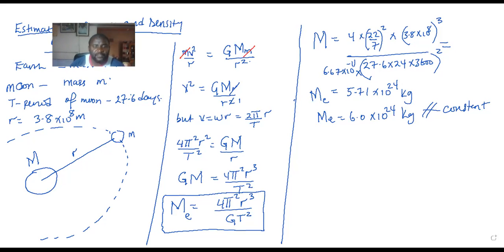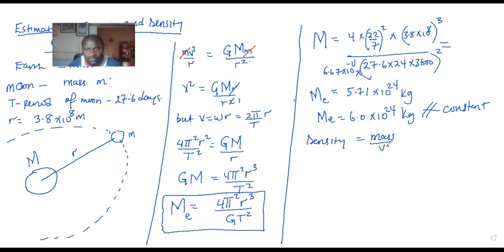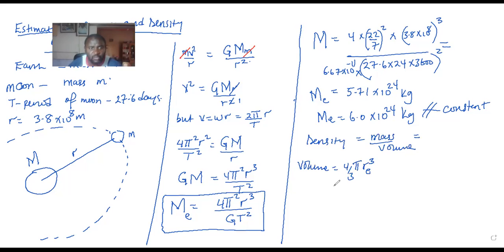So from there, if you have got the mass, we can also be asked to find the density of the earth. Remember density? The density is equal to mass over volume. Now we know the mass already, but the volume should be got from 4/3 π times the radius of the earth to the cube.